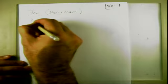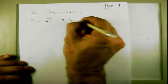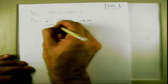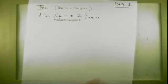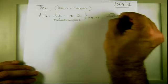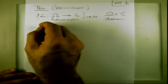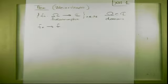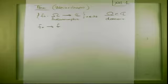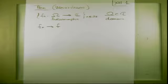Assume that you have a sequence of holomorphic functions defined on a domain omega, which is an open and connected subset of C. We want to investigate what are the properties of the limit function and which kind of limit will be needed in order to have good properties.